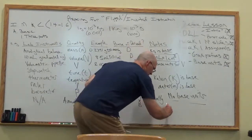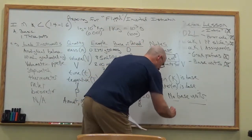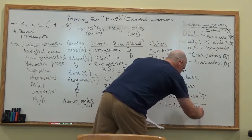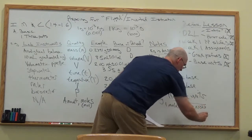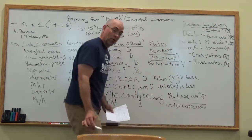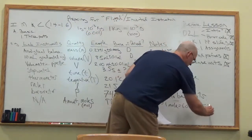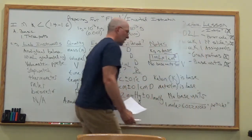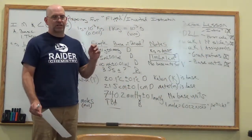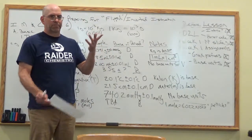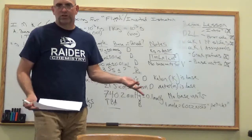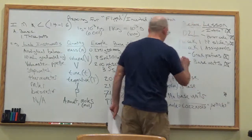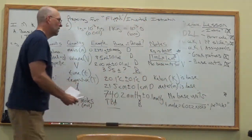One mole is 6.022 times 10 to the 23rd power — that's scientific notation. The unit is particles, which could mean atoms, molecules, pieces of paper — it doesn't matter. A mole of something is 6.022 times 10 to the 23rd of those somethings. You'll want to memorize that. The mole is the base unit for amount of matter.